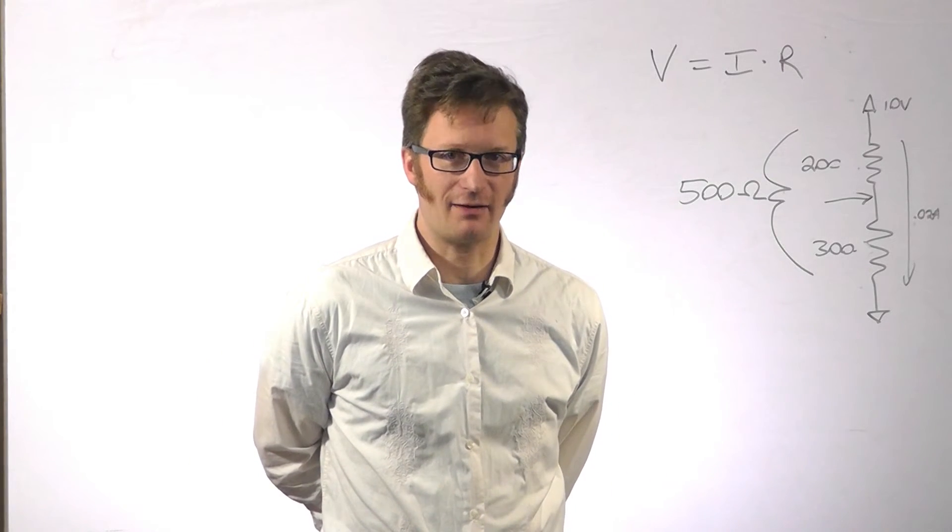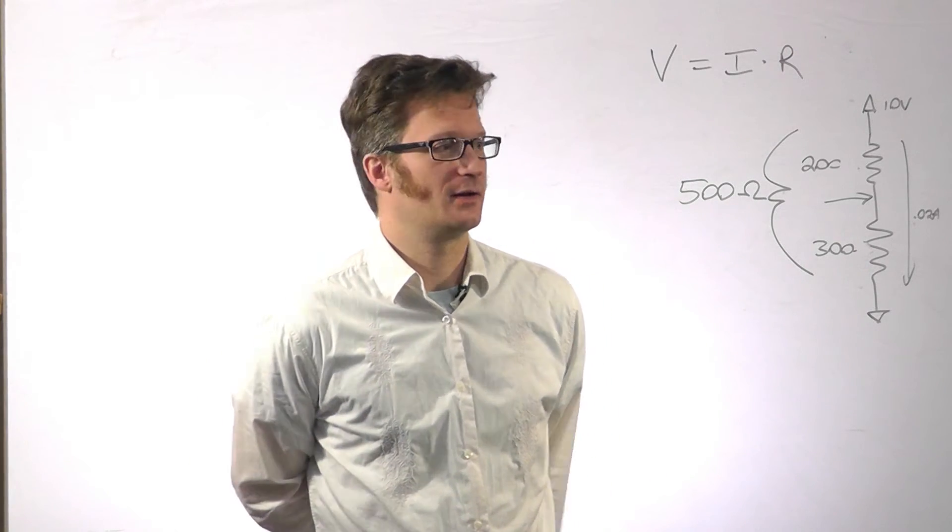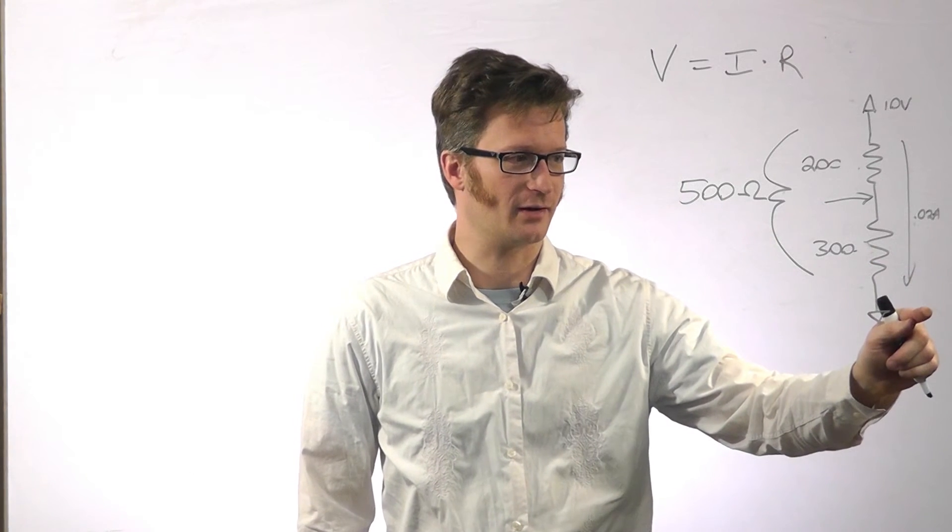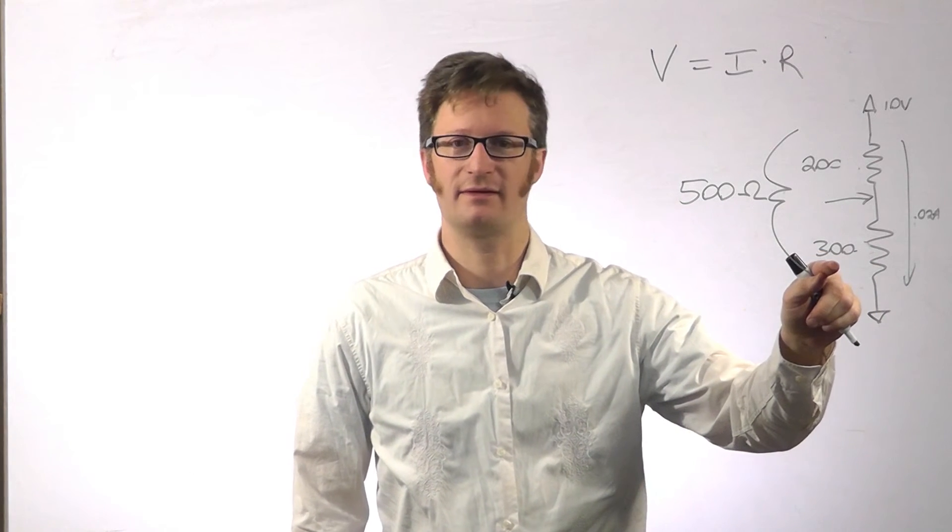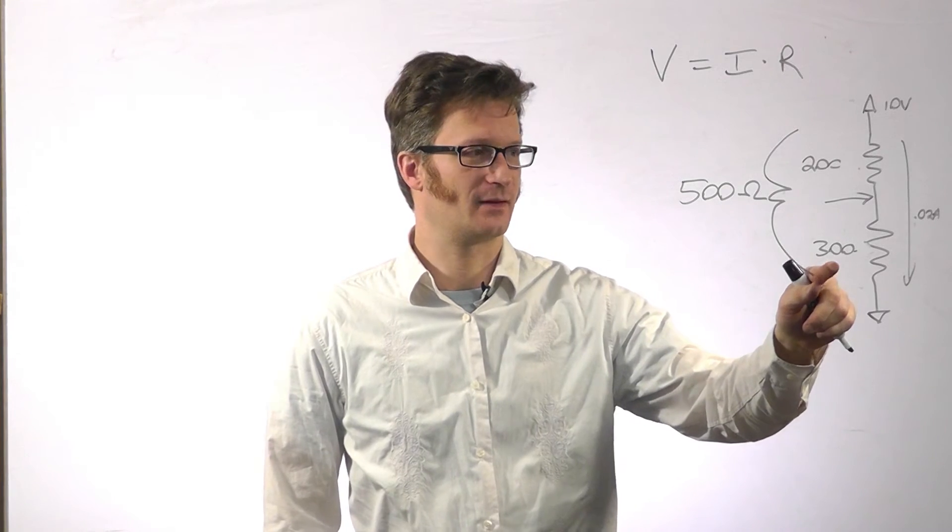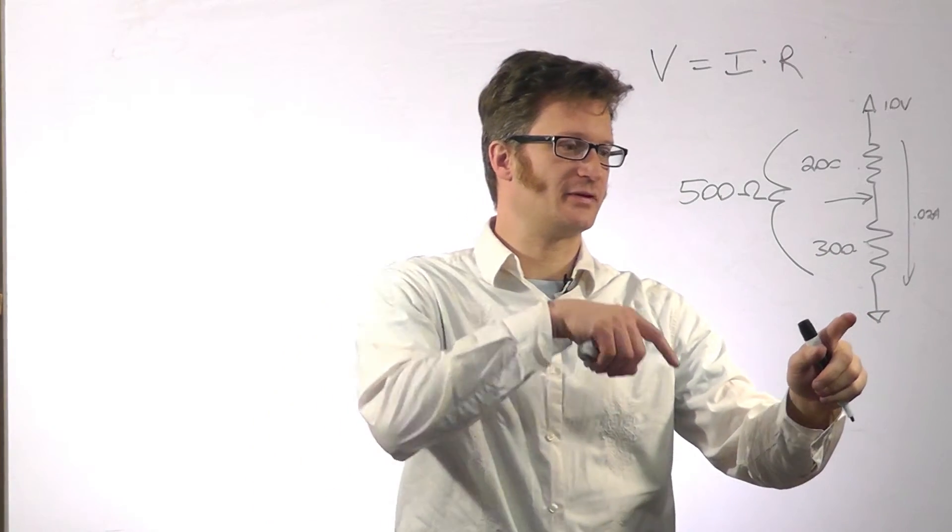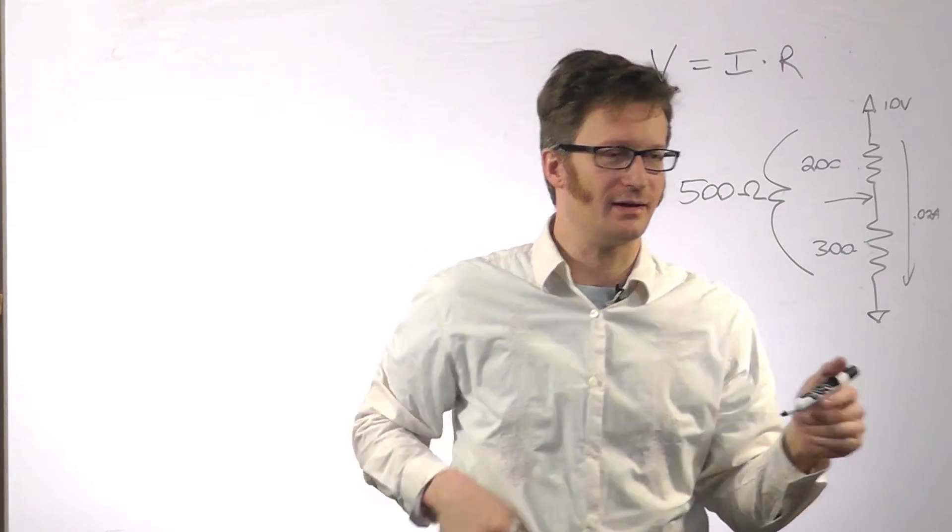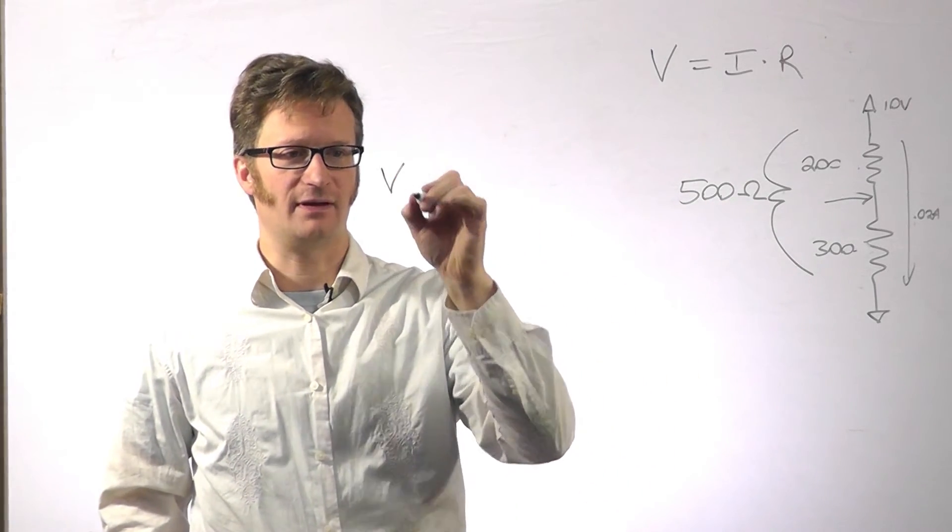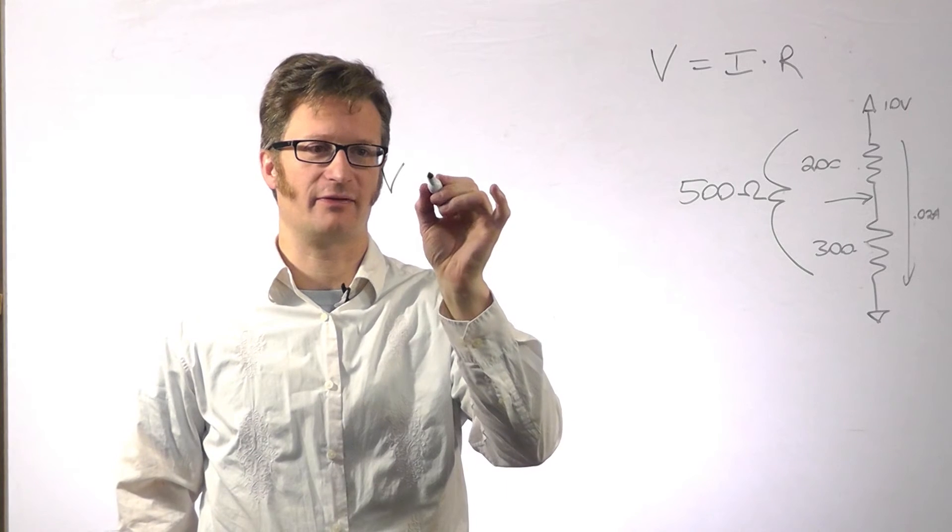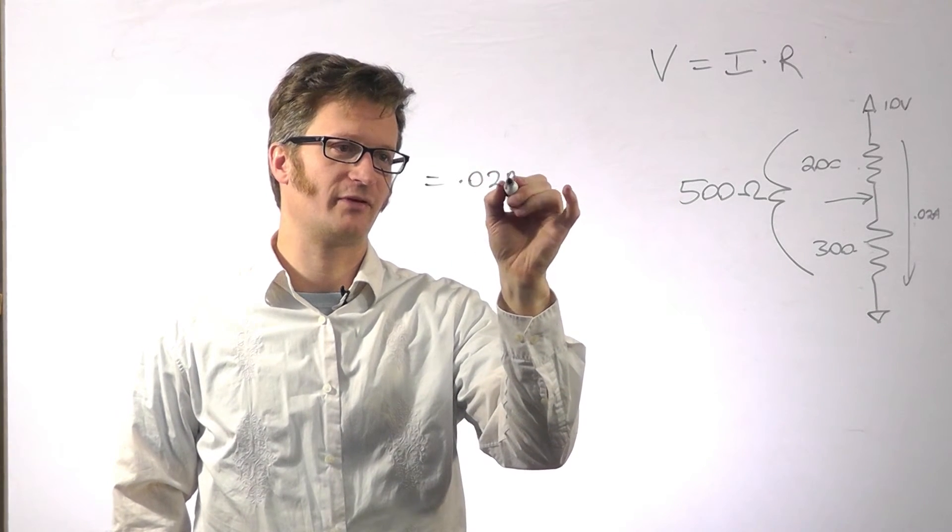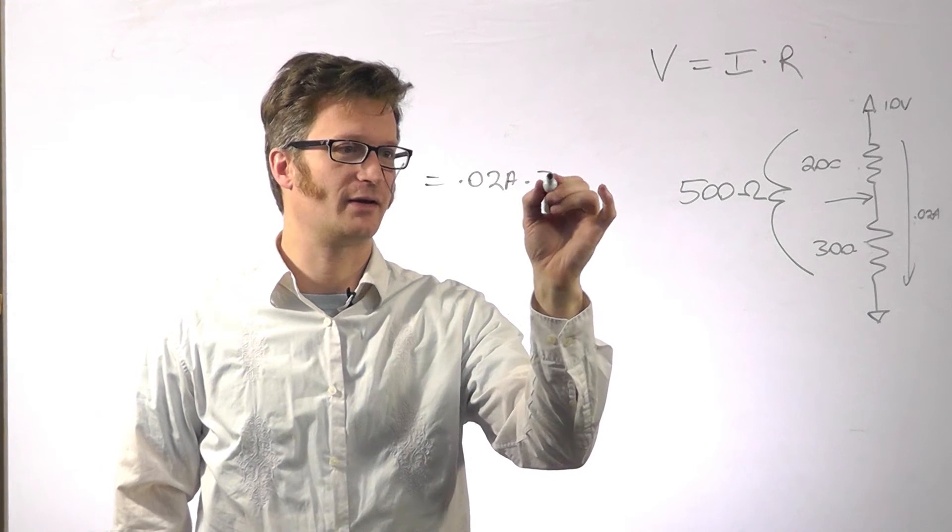We can figure that out now using Ohm's law. Because we know that we have 0.02 amps going through here. And we know this resistance right here. So the voltage from ground at 0 volts here will be V. This is what our unknown is this time. Equals 0.02 amps times 300 ohms.